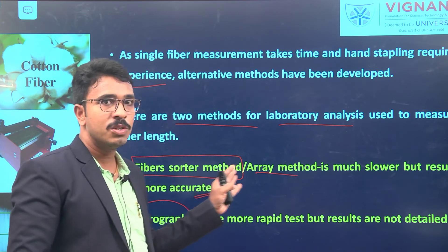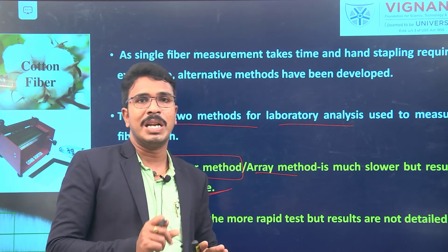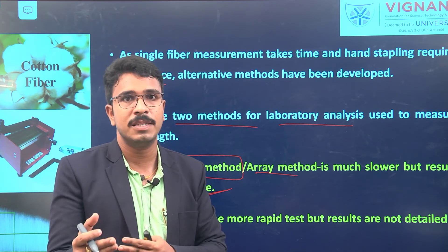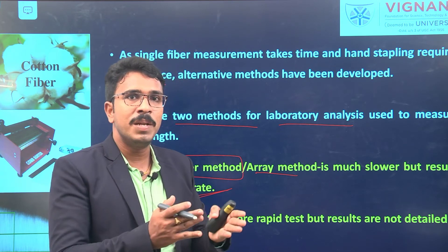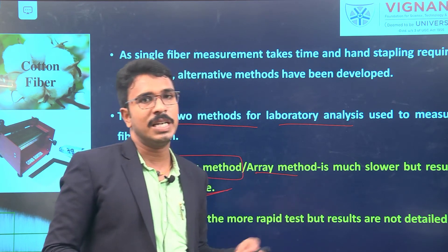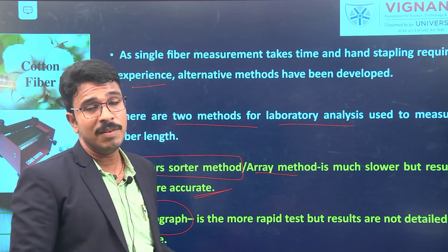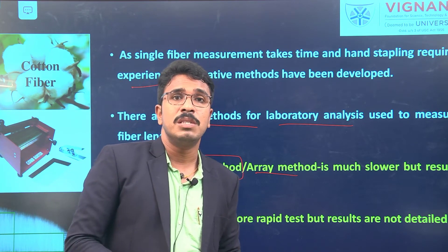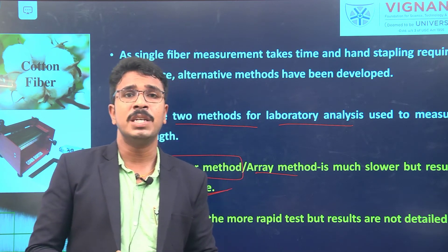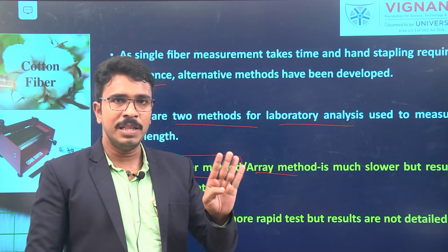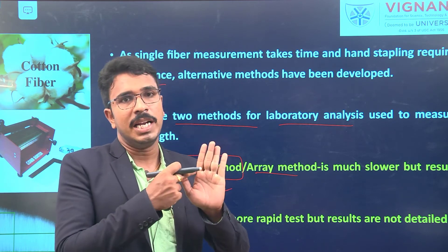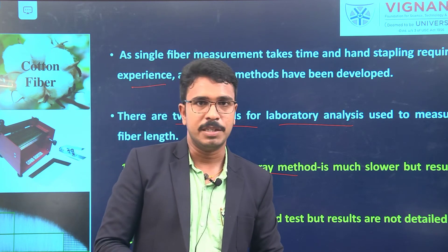The fiber sorter method works by sorting fibers based on their length — fractionating the sample into length groups. We sort fibers in decreasing length order: longer first, followed by shorter. From this we can determine properties such as effective length, mean length, upper quartile length, and lower quartile length. Popular fiber sorter methods include the Beyer sorter, Shirley comb sorter, and the web sorter. The fibrograph, in contrast, is an optical method where a fiber strand is scanned photoelectrically to give fiber length parameters.